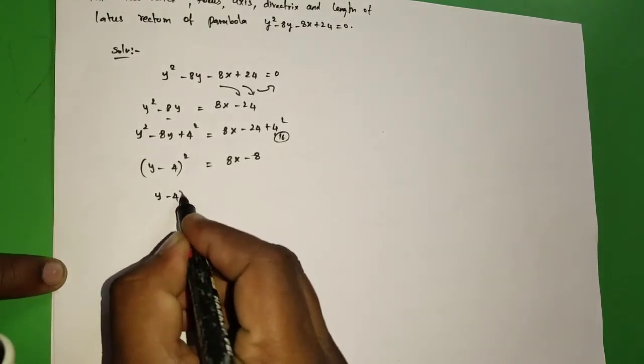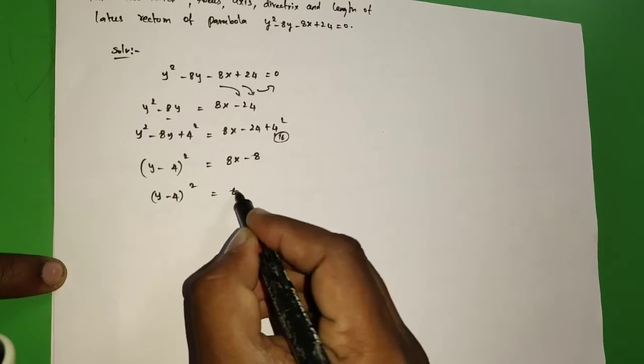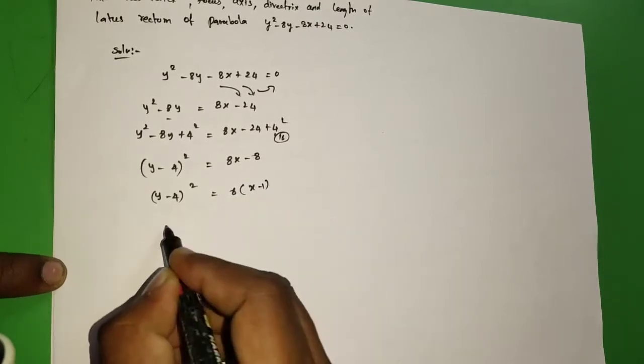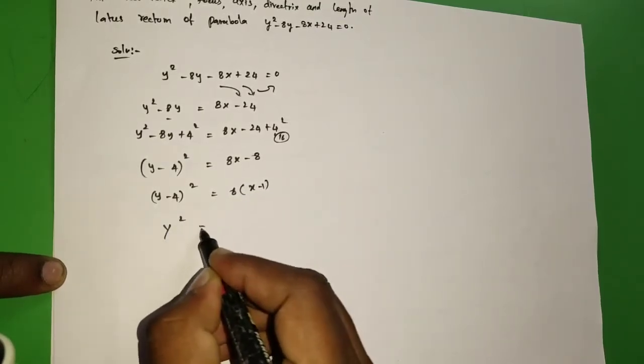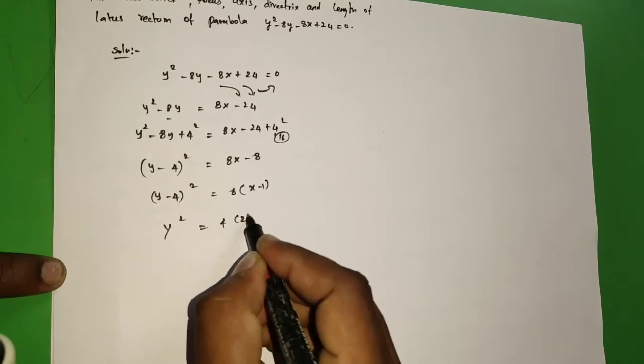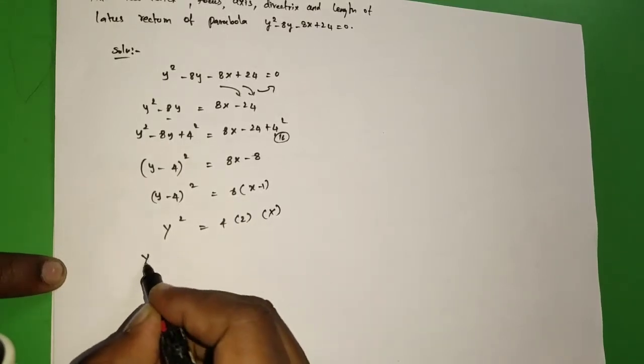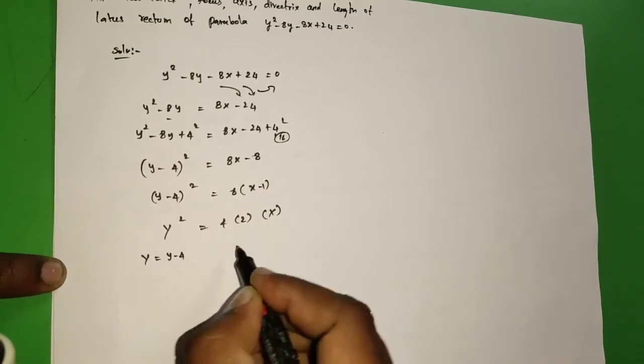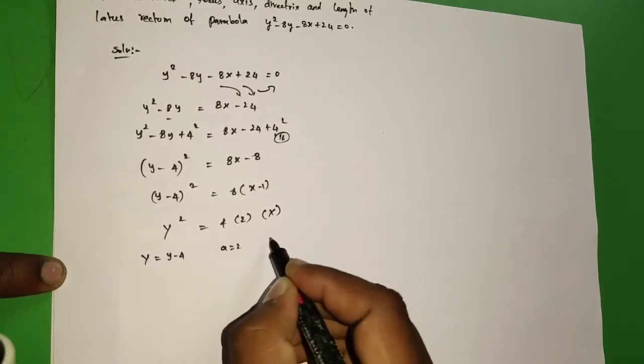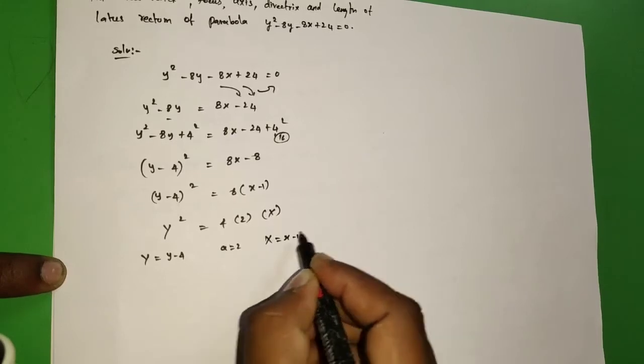Now (y - 4)² = 8x + 40. Take 8 common: 8(x + 5). Then (y - 4)² = 4 × 2 × (x + 5). Here we take it as Y² = 4aX. Y = y - 4, a = 2, and X = x + 5.